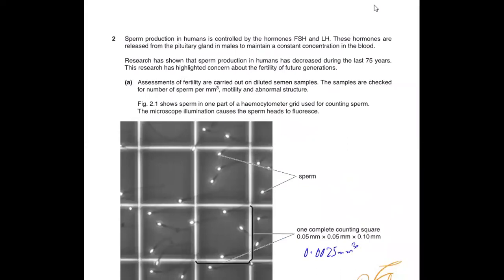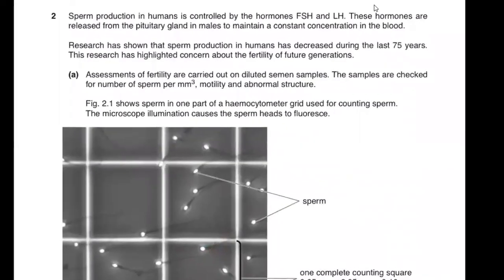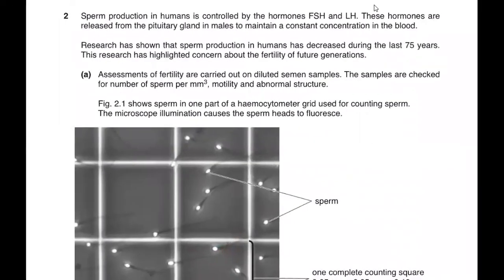When asked how cells can be counted, you must describe how to use this apparatus. The question is about sperm production in humans controlled by hormones FSH and LH. These hormones are released from pituitary glands to maintain constant concentration in blood. Research shows sperm production in humans has decreased during the last 75 years, highlighting concerns about fertility of future generations.